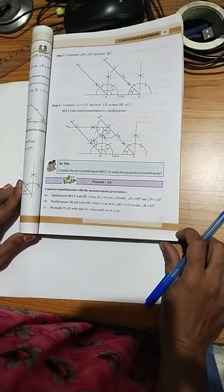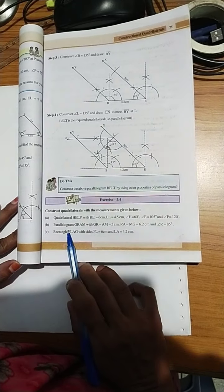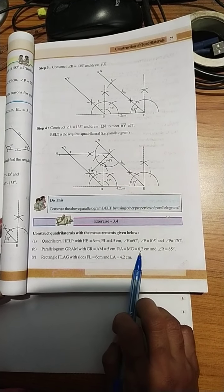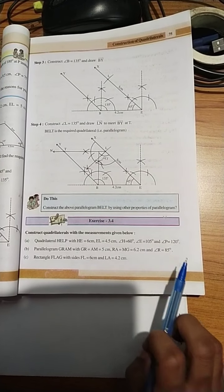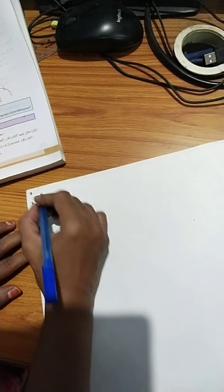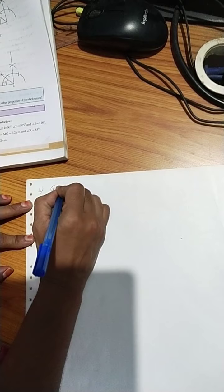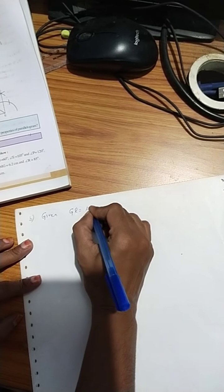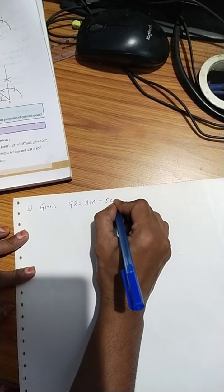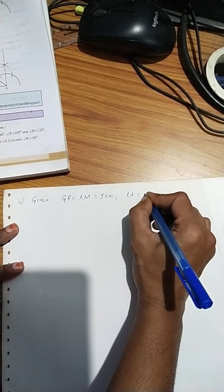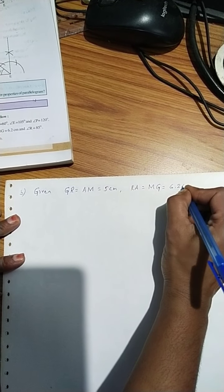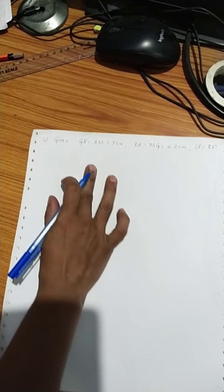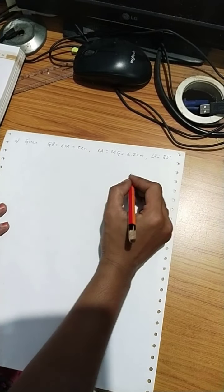Good morning students. In the previous class we learned about the first question. Today, parallelogram GRAM with GR equal to AM equal to 5 cm, RA equal to MG equal to 6.2 cm, and angle R equal to 85 degrees. First, what is given here: GR equal to AM equal to 5 cm, RA equal to MG equal to 6.2 cm, and angle R equal to 85 degrees. Draw the rough sketch of parallelogram GRAM.